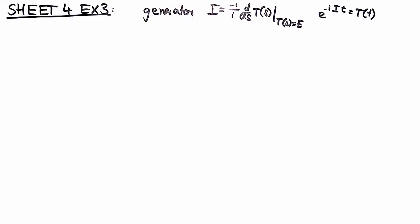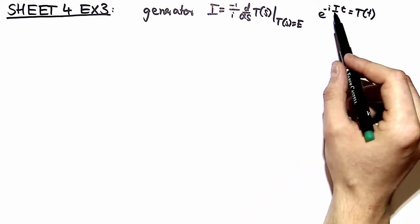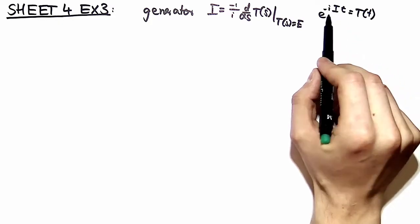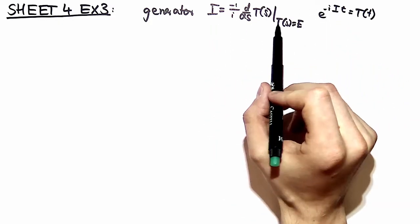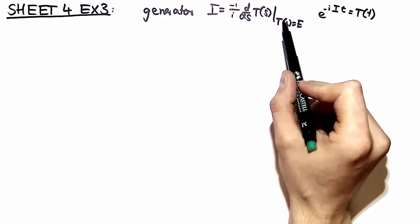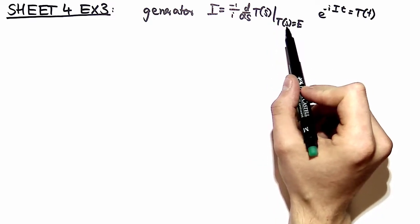Welcome back to exercise number three of problem set number four. Here we're taking a closer look at generators. Generators make it possible to construct all elements of a representation by taking the exponential. The generator i is defined on page 80 of the script, and we restrict it to all s which yield the identity element.